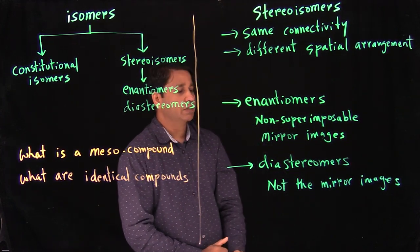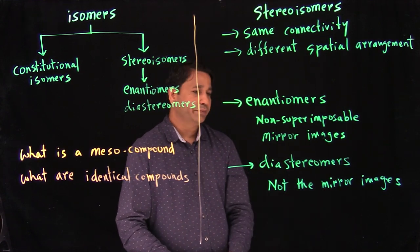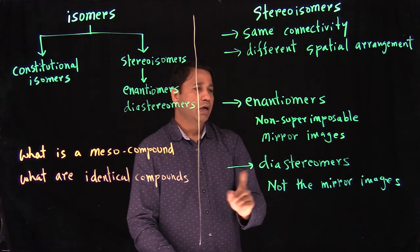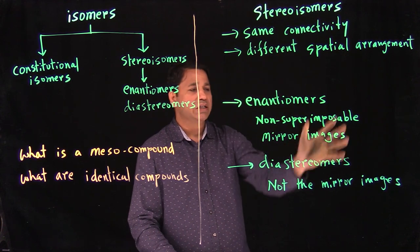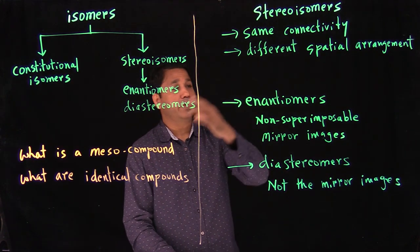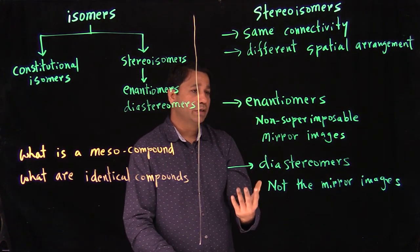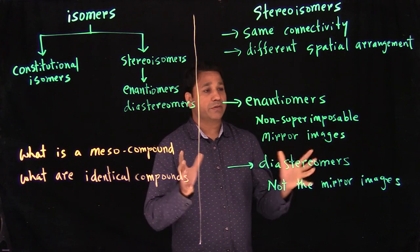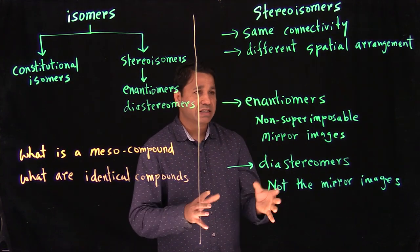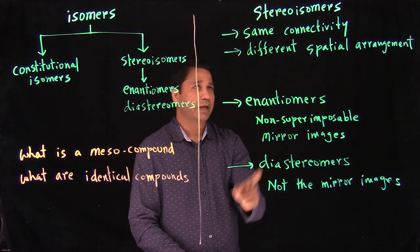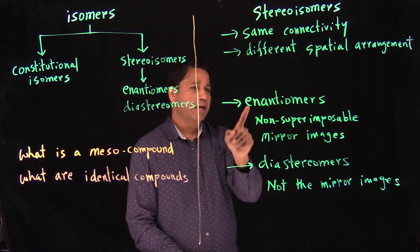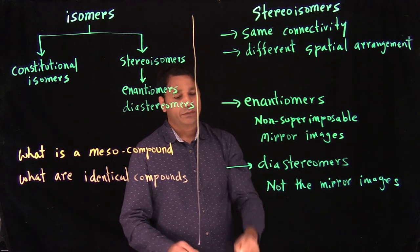Diastereomers are not mirror images of each other — unlike enantiomers, which are mirror images. Now, instead of using mirror image concepts, which can be confusing, we go with what we learned before: R and S configuration. We spent a lot of time learning R and S, and we can use that to find enantiomers and diastereomers. Stereoisomers is the common term, and enantiomers and diastereomers are its two branches.